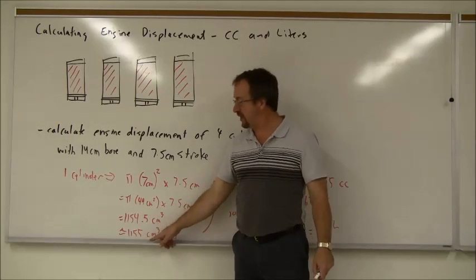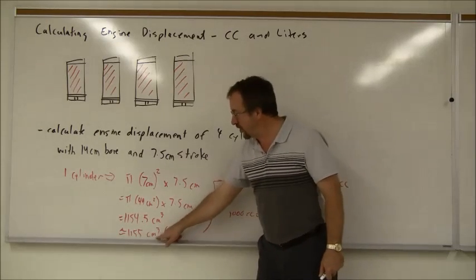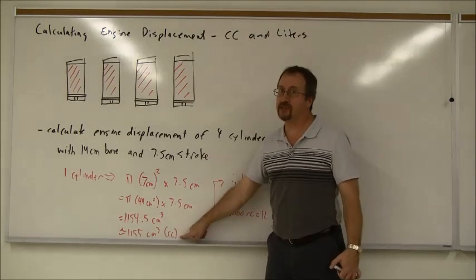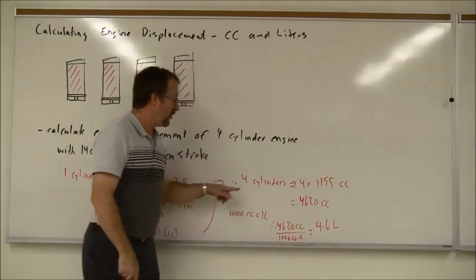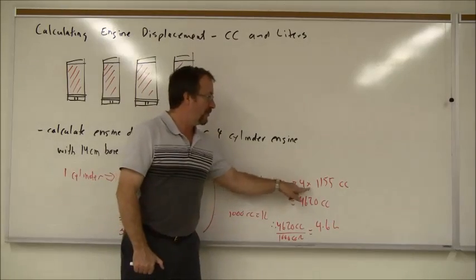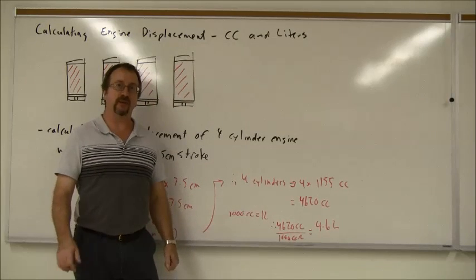We'll round that just to make the future math easier to 1155 cubic centimeters. Centimeters cubed is the same thing as cc, cubic centimeters. It means the same thing. So for four cylinders, I multiply by four, and I find that I've got 4,620 cc's or cubic centimeters.